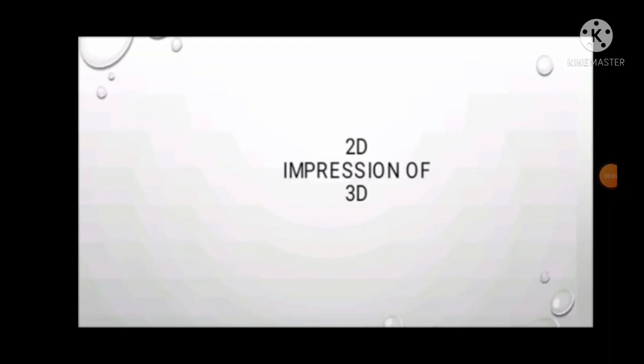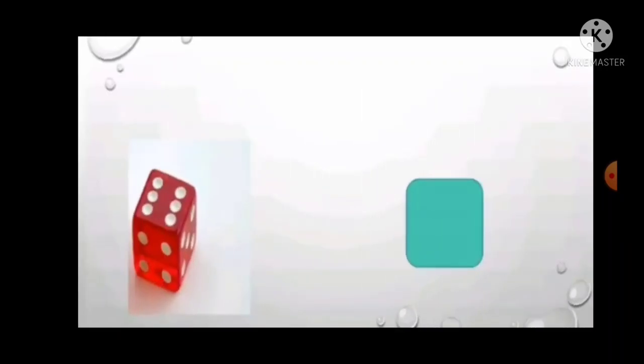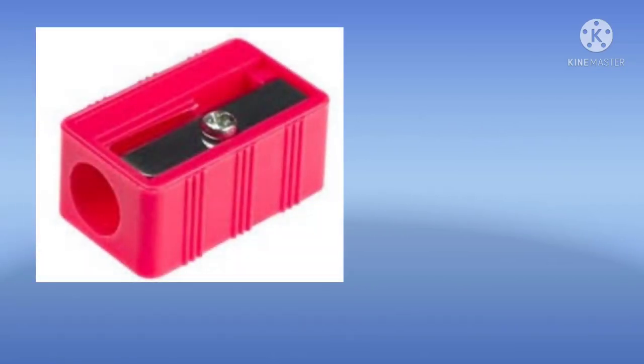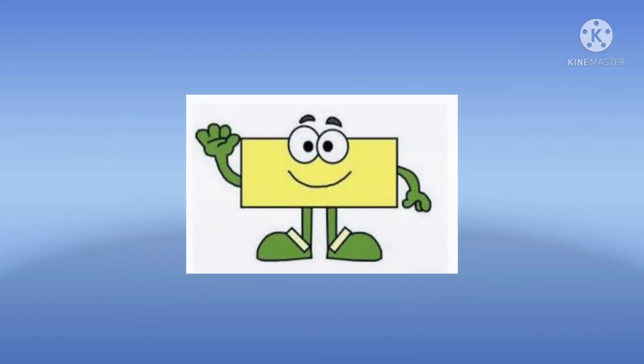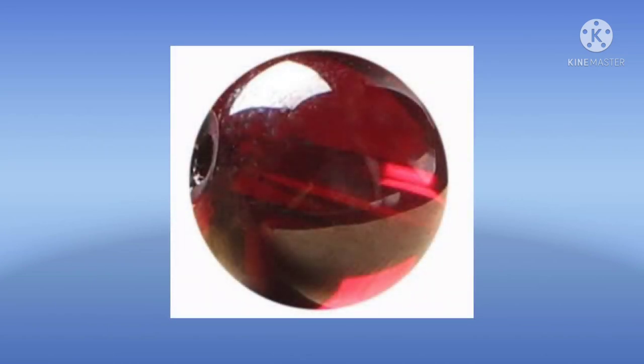Next one is 2D impression of 3D shapes. See that? Take a dice. We get the impression as square. And then eraser. Its impression we get rectangle. Third one is sharpener. This impression we get the shape is rectangle. And then take beads. Its impression we get the shape is circle.